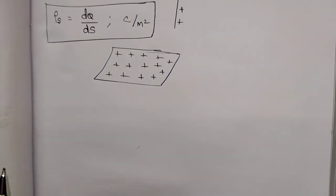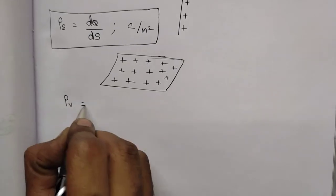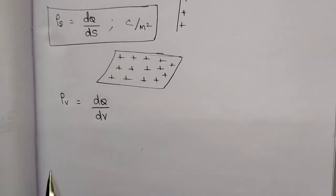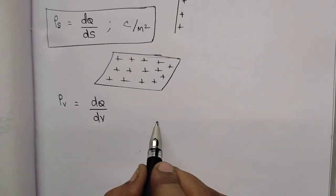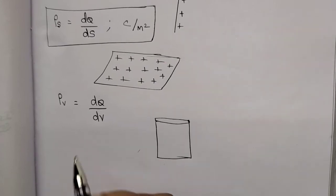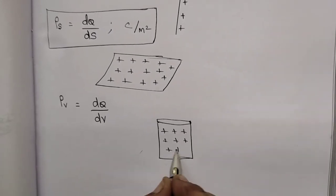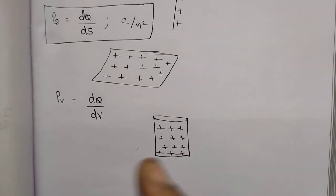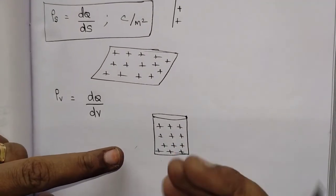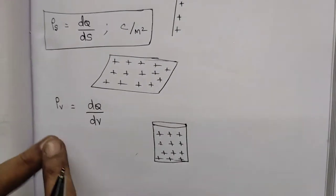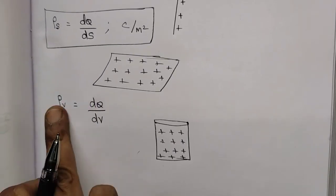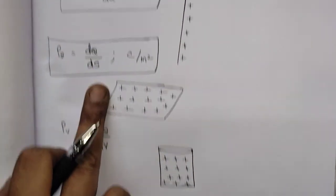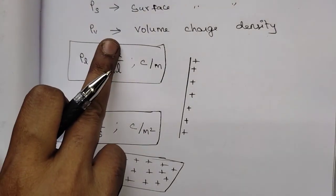The last one is volume charge density, rho_V. Charge per unit volume is known as volume charge density. Consider a cylindrical shape — a cylinder which consists of lots of charges inside it. This particular volume comprises of how many charges inside it is known as volume charge density. So: volume charge density is charge per volume, surface charge density is charge per surface, and line charge density is charge per length.